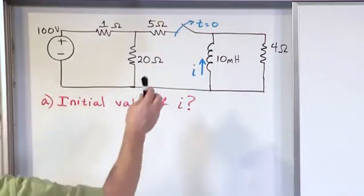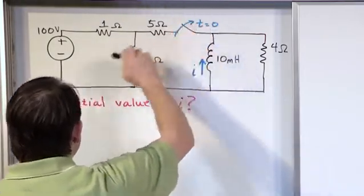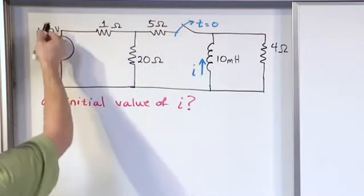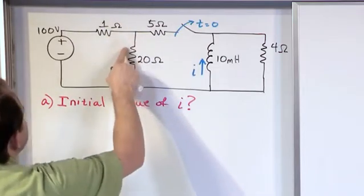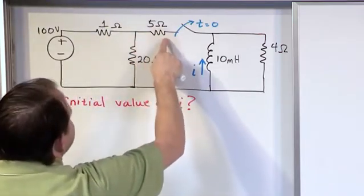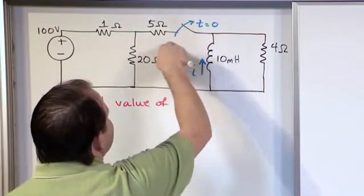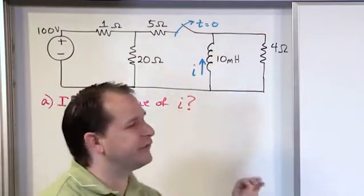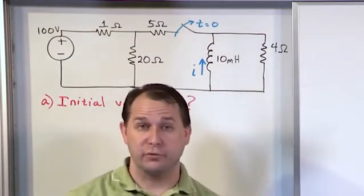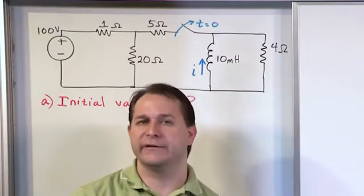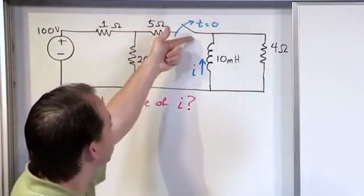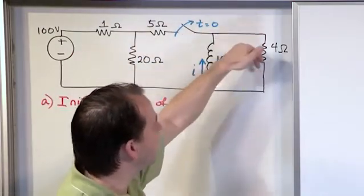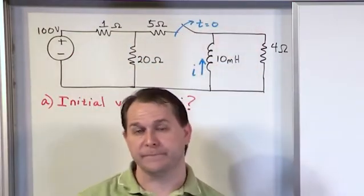In this case, before the switch opens, the switch is closed and current comes out of the 100 volt source. It comes up out of the positive terminal, some of it branches here, some goes through the 5 ohm resistor and through the switch. When it gets to this point, since we've been closed for a long time, this inductor looks like a short circuit because it's just a coil of wire. The current will be shunted down here, and none of it will make it over to the 4 ohm resistor.